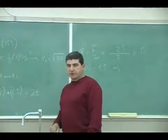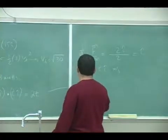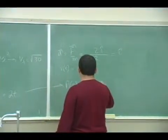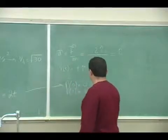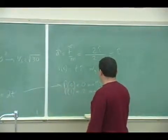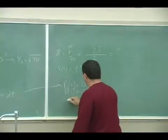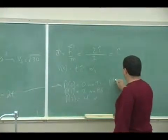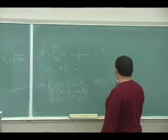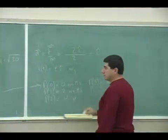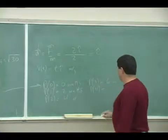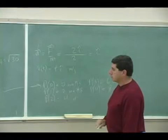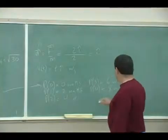0, the instantaneous power is 0 watts. At t equals 1 second, the instantaneous power is 2 watts. At t equals 2 seconds, the instantaneous power is 4 watts. 3 seconds it's 6 watts. 4 seconds it's 8 watts. What's the total time? Square root of 30. So when you